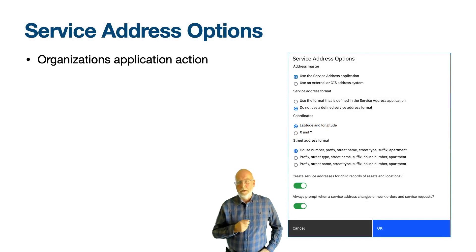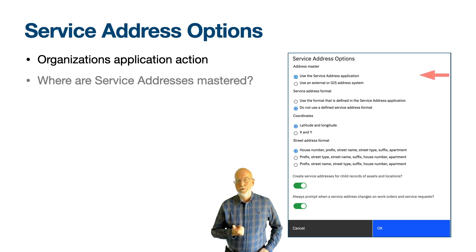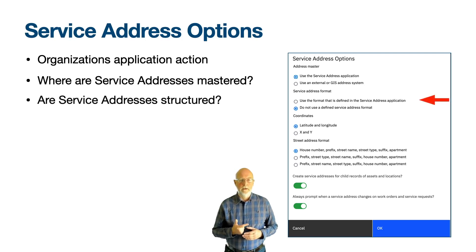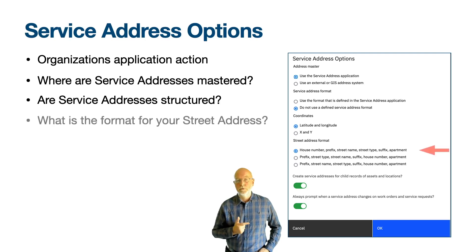In the Organizations application there is an action called Service Address Options which opens a dialogue box. These settings are made for the current organization. The Address Master option determines whether records are created in the service address application or whether an external system or GIS address system is mastered with this data, in which case the service address application will be read-only. The Service Address Format option allows the first line of the street address to be a structured address, and you can only modify the street address field through the action Add Modify Street Address. There is a second radio button for defining which of the three formatting options will be used for the street address.